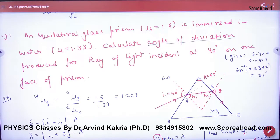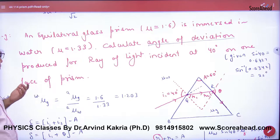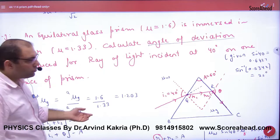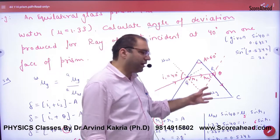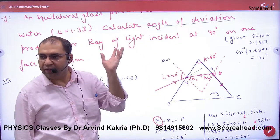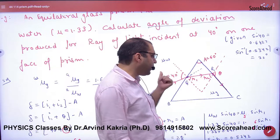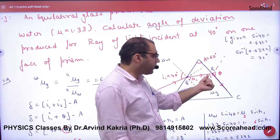Question is: equilateral glass prism with μ equal to 1.6 is immersed in water. We put it in water. Calculate angle of deviation produced for a ray of light incident at 40 degrees on one face of the prism. So when you put it in water, this is glass and this is water. Ray of light at an angle of 40 degrees refracts and goes through.